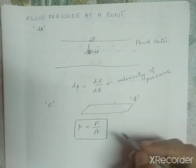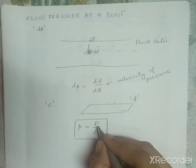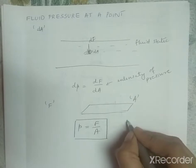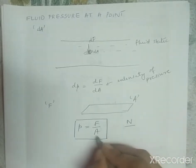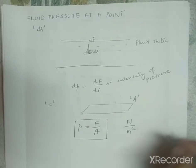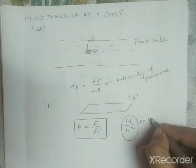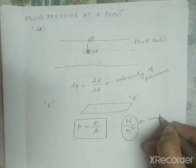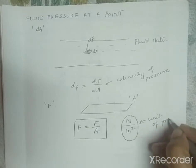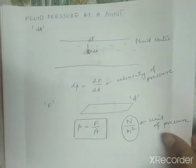The unit of pressure is equal to the unit of force divided by area. The unit of force is Newton, and the unit of area is meter square. Therefore, Newton per meter square is the unit of pressure.